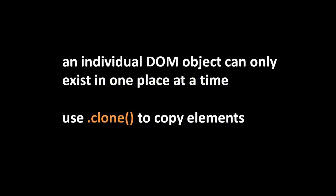An important thing to understand about DOM and jQuery methods that insert elements is that if you're inserting an element that already exists somewhere in the DOM, that element gets moved — not copied — because a single DOM object can only exist at one place. If you want a copy, you have to explicitly copy the element. This is in fact what jQuery does when appending or prepending to a set with more than one target element — it copies the elements for each target. To explicitly copy an element yourself, use the clone method, which returns a new jQuery object containing copies of all the same elements.